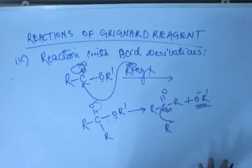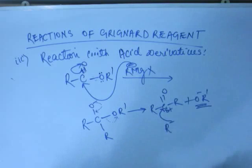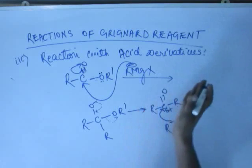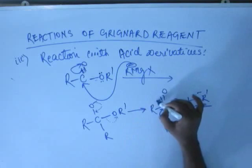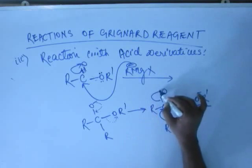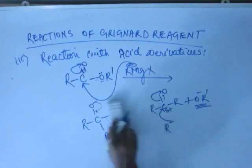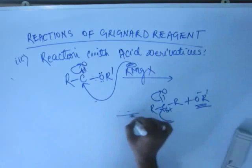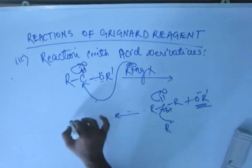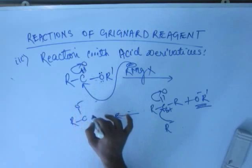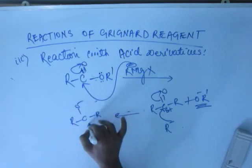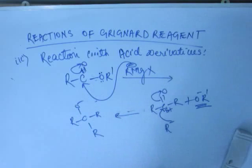When we say attack, attacking means you are putting an electron. When you put an electron from outside, one of the bonds of carbon has to be broken, resulting again in the charge coming on Oxygen, and one of the C-R bonds will increase. Again you have a tertiary alkoxide ion.